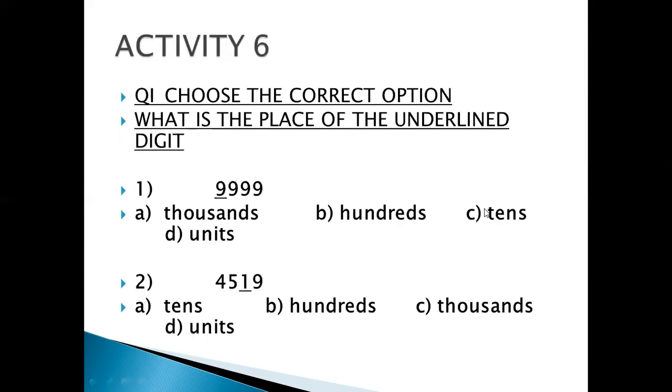When you draw a line across the page, take a new page and write Activity 6. Again it is MCQs. Choose the correct option. What is the place of the underlined digit? Now here you have to write the place. So whether it is 1000th place, 100th place, 10th place or unit place. So the first number is 9999.